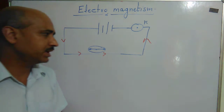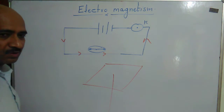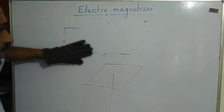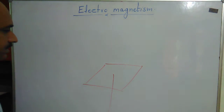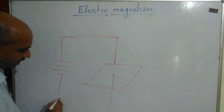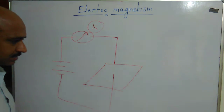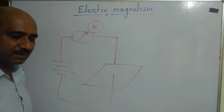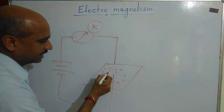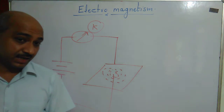In another experiment, a piece of cardboard was taken with a straight wire passed through it. This wire was connected to a battery with a key. Iron dust particles were sprinkled on the cardboard. We noticed the formation of magnetic lines of force around the straight wire.